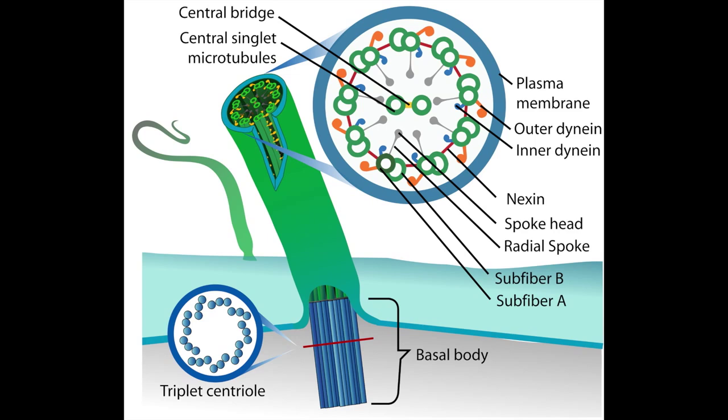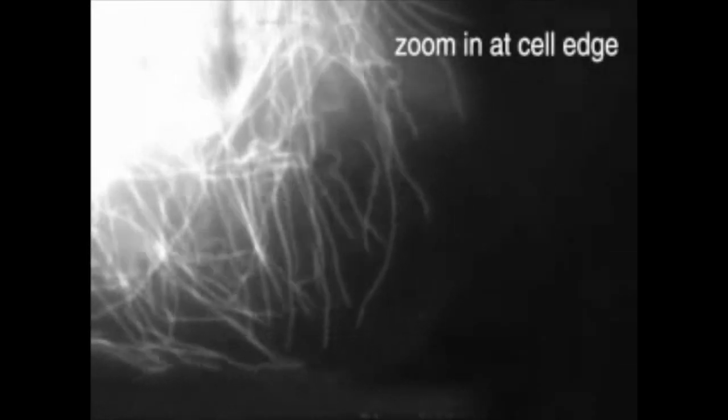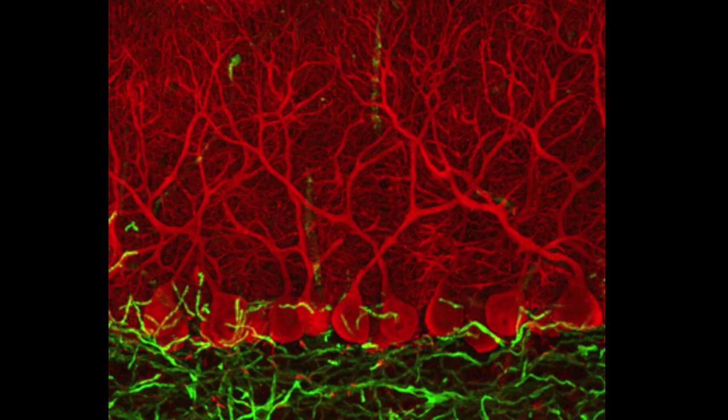They form much of the cytoskeleton of all cells where they fluctuate between states of growth and dissolution. But neurons throughout the body are filled with microtubules of a stable length which support a neuron's delicate filamentary forms.